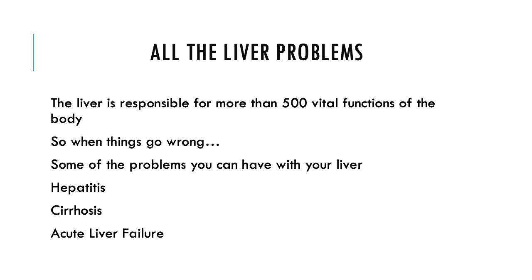The liver is responsible for more than 500 functions in the body, so when things go wrong with the liver, a lot goes wrong. Some of the problems you can have include hepatitis — which is inflammation — and cirrhosis, which is a chronic liver failure where there's actual breakdown of the hepatocytes and a scarring formation over the liver. And then there's acute liver failure, where something happens more rapidly compared to cirrhosis.